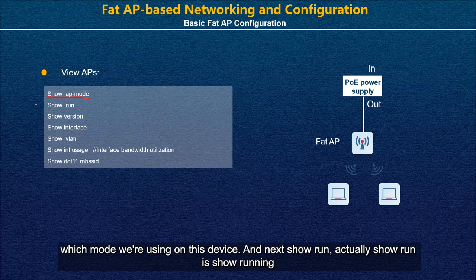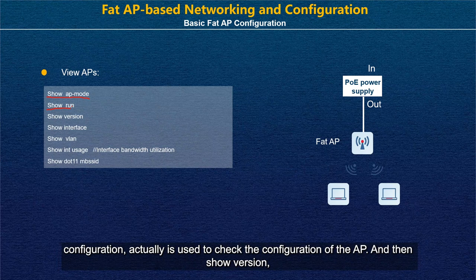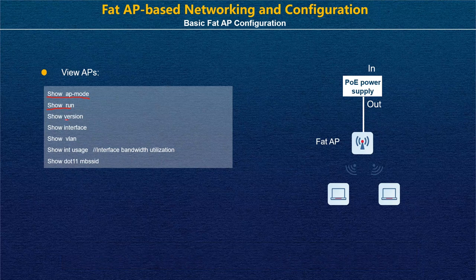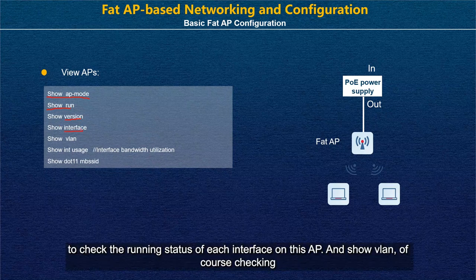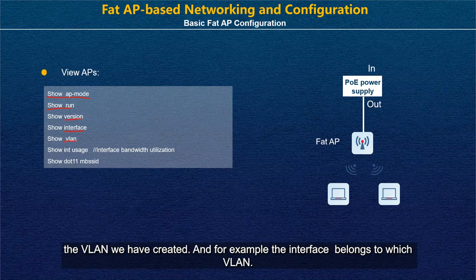Next, 'show run' is short for 'show running configuration', used to check the configuration of the AP. 'Show version' checks the device version. 'Show interface' checks the running status of each interface on the AP. 'Show VLAN' checks the VLANs created and which interface belongs to which VLAN.